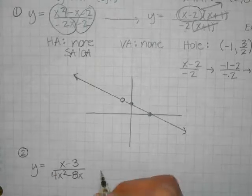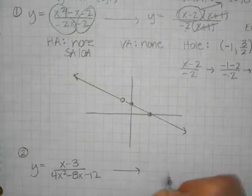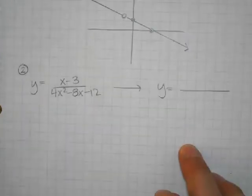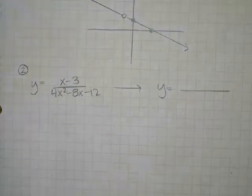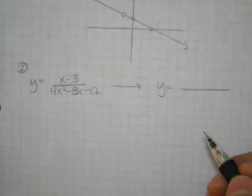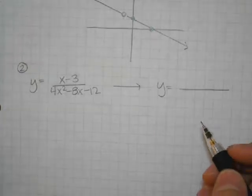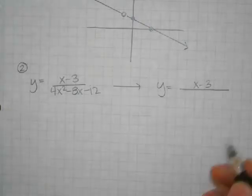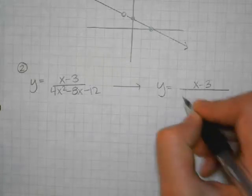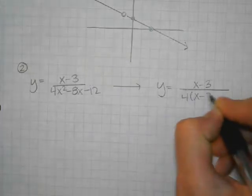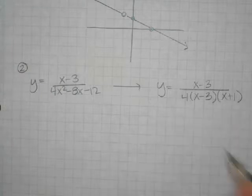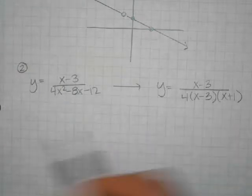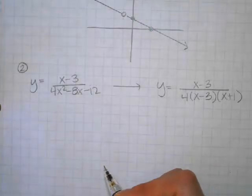Is that minus 12? Yeah, minus 12. Okay, so there's the second one. Go ahead and take a moment and see if you can factor it. What did you guys get when you factored the top? X minus 3. And how about the bottom? 4x minus 3, x plus 3. On the bottom, you should have had a GCF of 4 that you took out before you even got started, and then after that it's just a normal diamond problem.